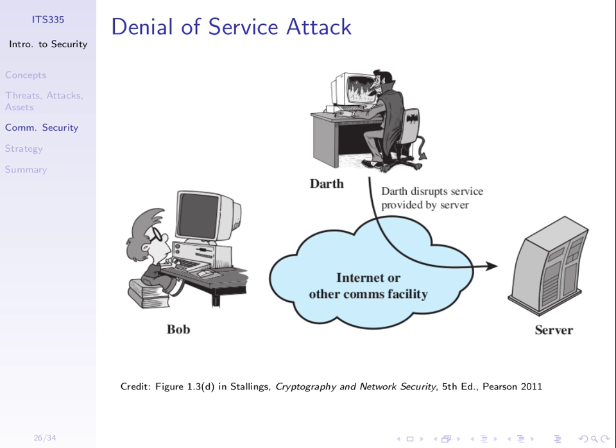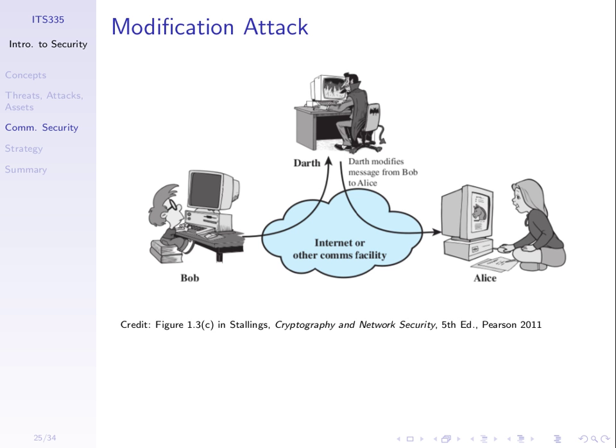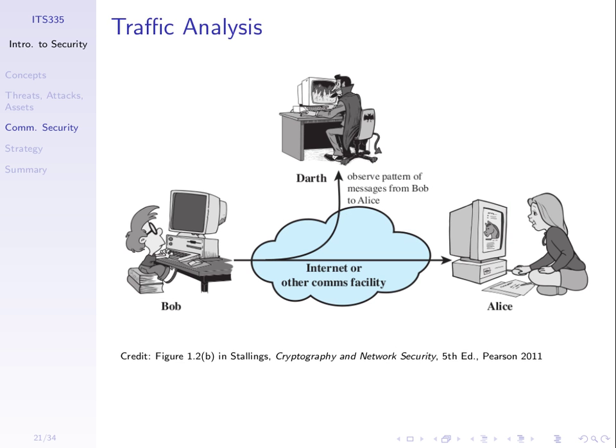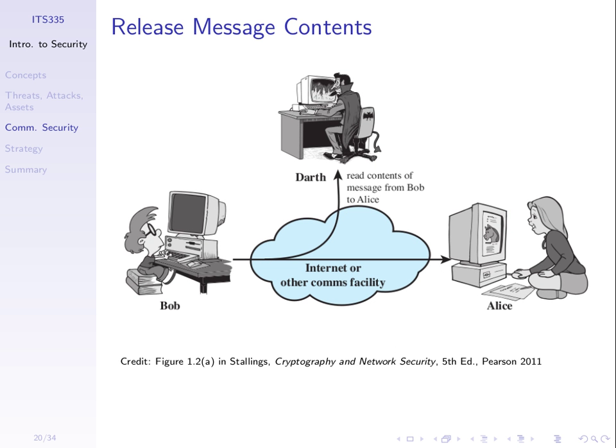We saw an example of a masquerade attack. We have one lecture that talks about denial of service attacks and we'll see some examples there. Just before we move on, a simple example of releasing the message contents: two users are communicating. I'm going to communicate from my tablet, in Bob's position, to a website, and via my laptop I'm going to try and intercept those messages. It turns out it's quite easy, especially with Wi-Fi.